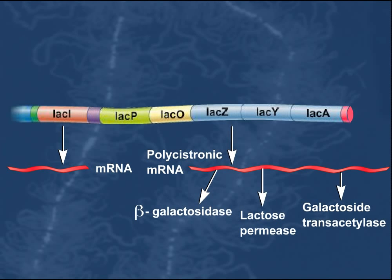This polycistronic messenger RNA is then translated to produce the beta-galactosidase, lactose permease, and galactoside transacetylase proteins. Therefore, the induction of the LAC Operon enables the bacterium to efficiently transport lactose into the cell and metabolize it.